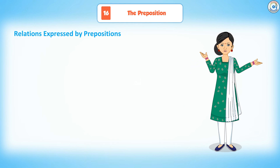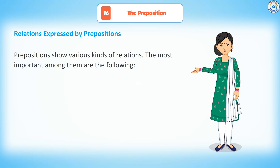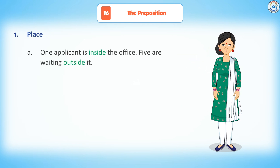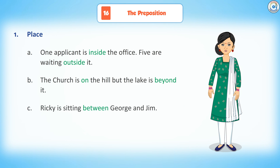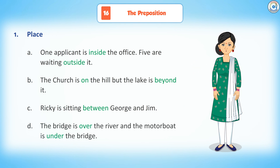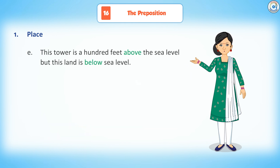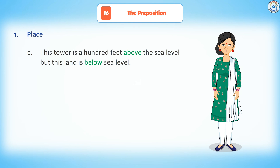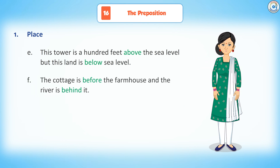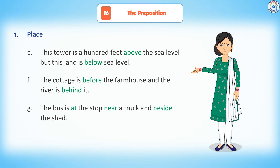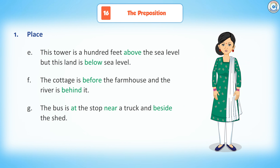Relations expressed by prepositions — the most important are: First, place. One applicant is inside the office; five are waiting outside it. The church is on the hill, but the lake is beyond it. Ricky is sitting between Georgie and Jim. The bridge is over the river and the motorboat is under the bridge. This town is a hundred feet above sea level, but this land is below sea level. The cottage is before the farmhouse and the river is behind it. The bus is at the stop near a truck and beside the shed.